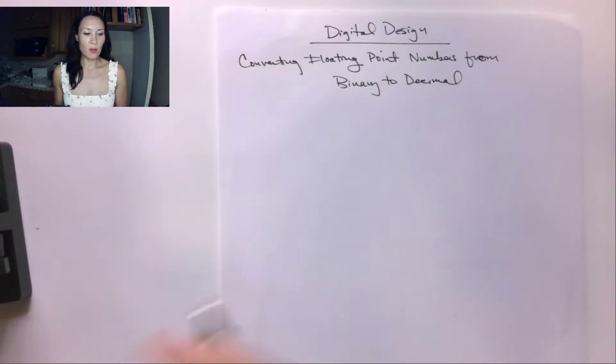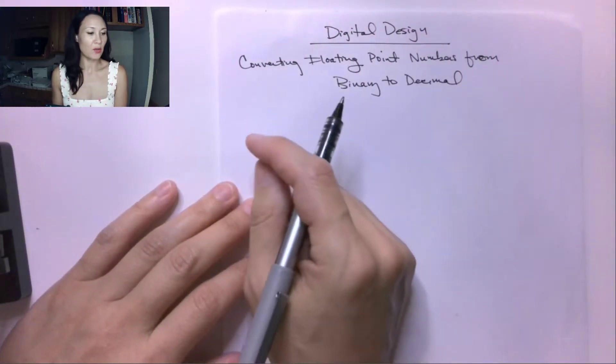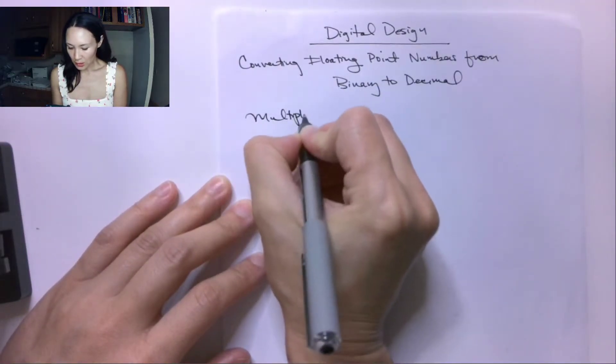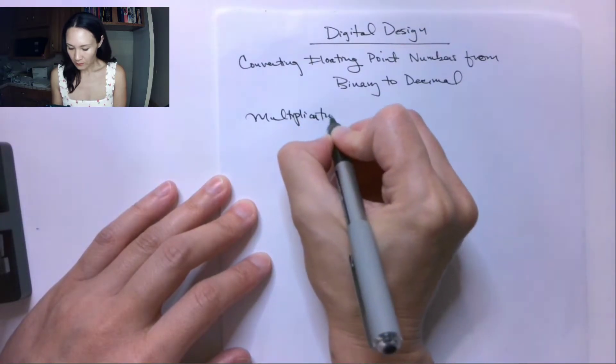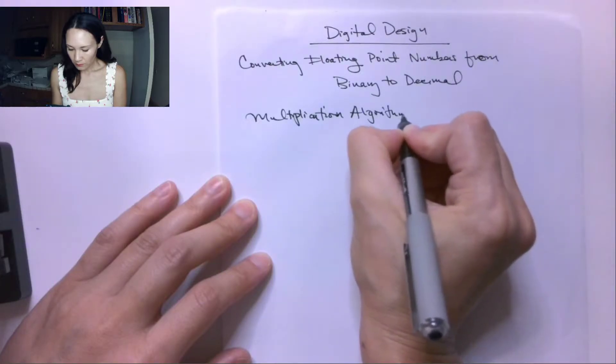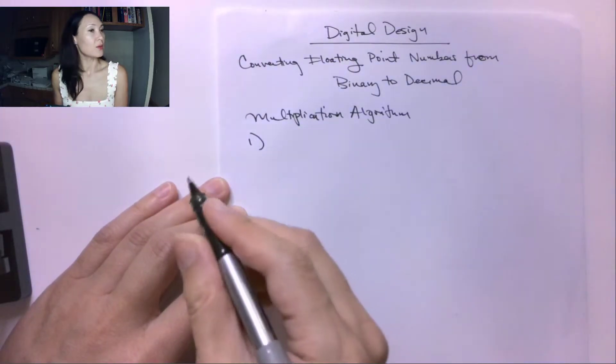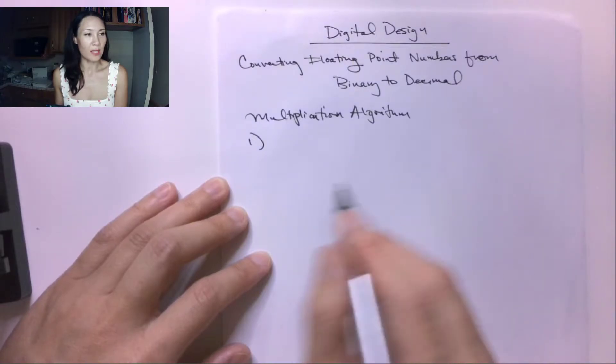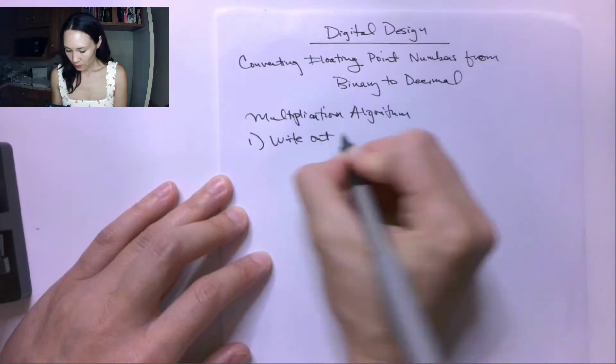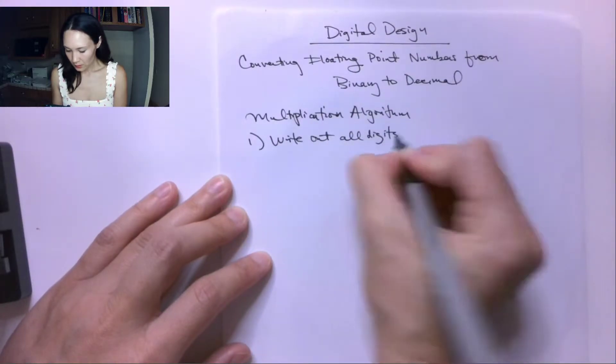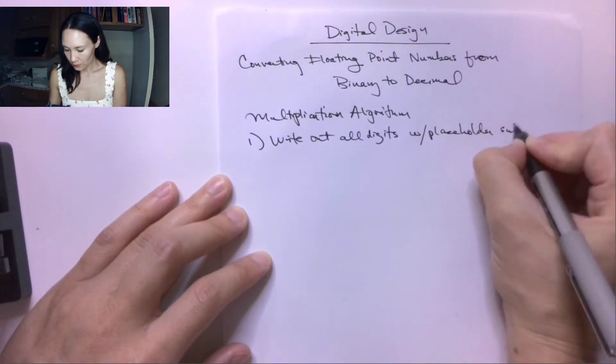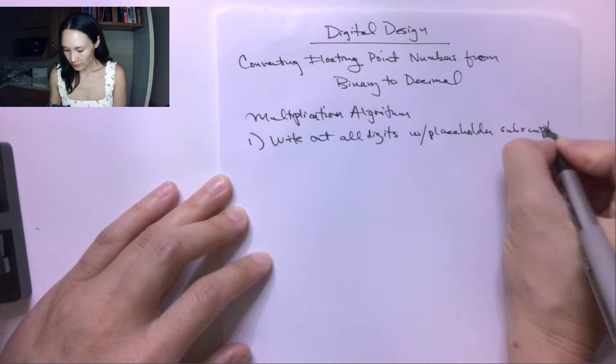The method we'll use is the same multiplication algorithm that we used before. If you recall, the multiplication algorithm, the first thing we did is we wrote out all the digits of the number with a placeholder subscript.